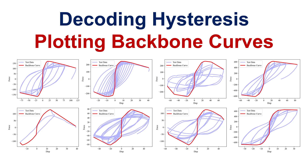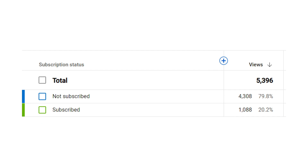Backbone curves allow for a quick and effective comparison of overall behavior. Engineers can assess and compare the strength, stiffness, and ductility characteristics of different responses very easily.